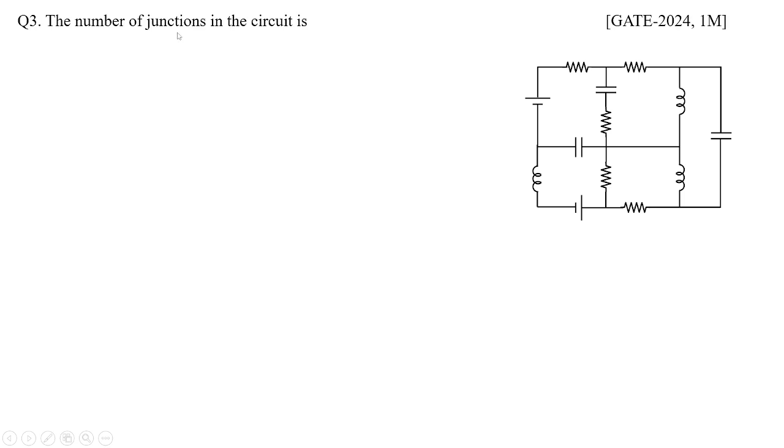In the next problem the number of junctions in the circuit is dash. So you need to find out the nodes. So you can see the network circuit is connected in this fashion and the options are given as 8, 6, 7 and 9. So which is the right option? We have to look into the node conditions first.